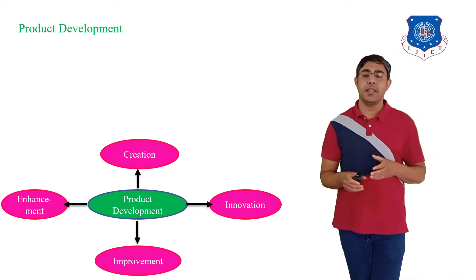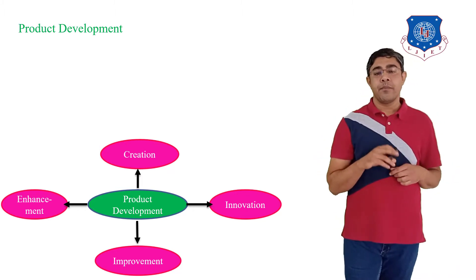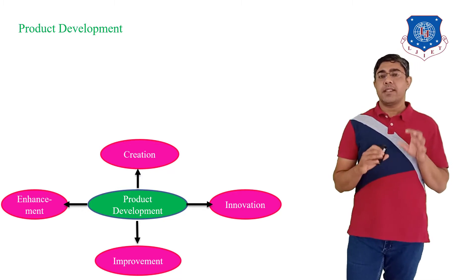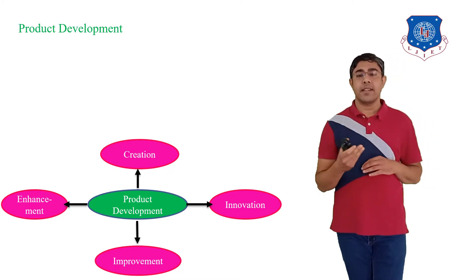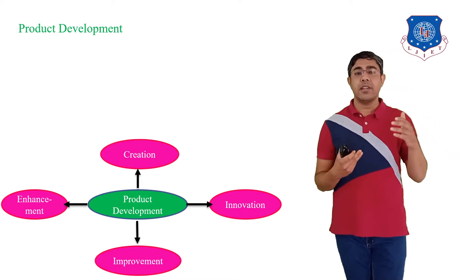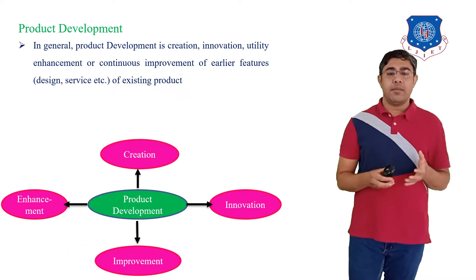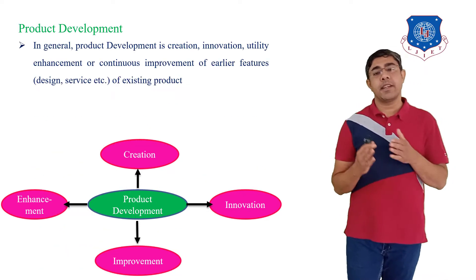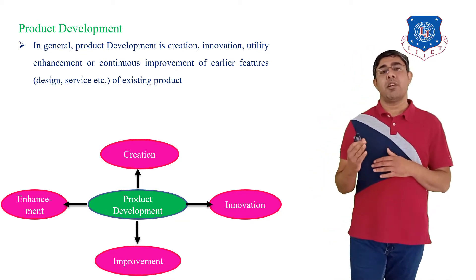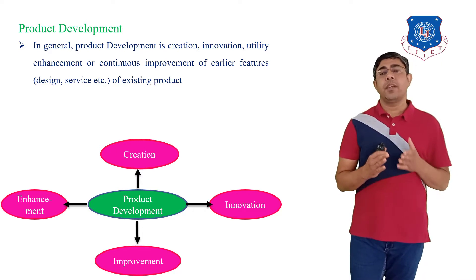It is also done to improve earlier features, techniques, or systems. Here in this chart you can see that at the center there is product development, and at the peripheries there are creations, innovations, improvements, and enhancements. So product development is nothing but the creation, innovation, improvements of existing products, or enhancing the utility of a product. In general, product development is the creation, innovation, utility enhancement, or continuous improvement of earlier features like design, service, etc., of the existing product.